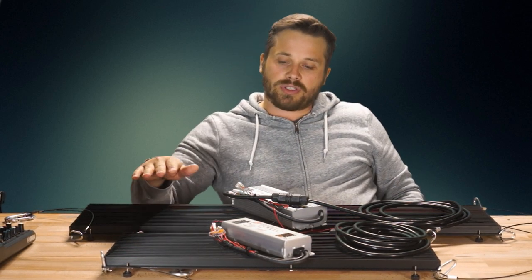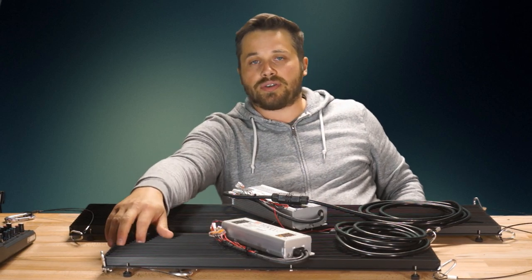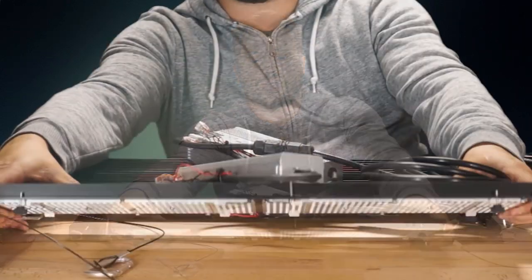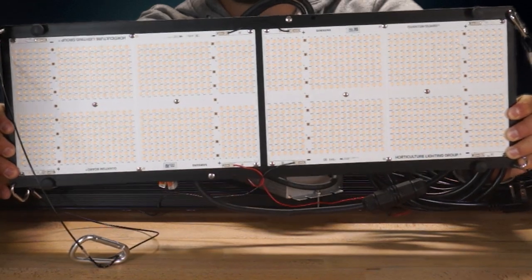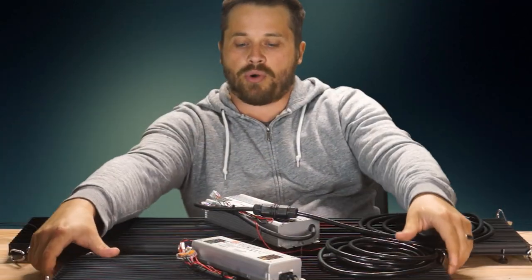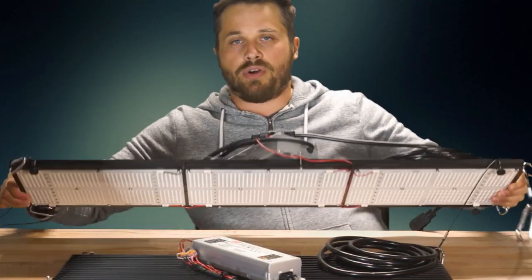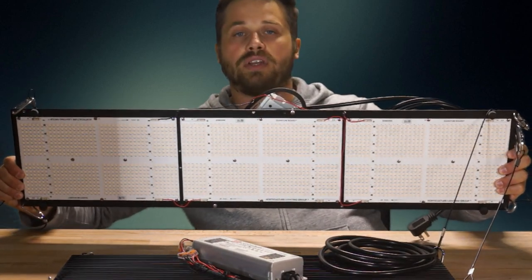So these are both from Horticulture Lighting Group. The one in the front is the 260 watt kit and it's got two of those new QB648 boards on it. And then the big boy in the back here is the 320 watt version with three boards on it.